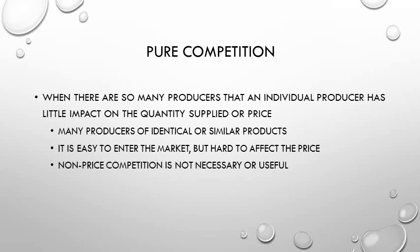The first market structure is pure competition. Pure competition exists when there are so many producers that an individual producer has very little impact on the quantity supplied or the price. Many products of similar or identical quality are provided by an almost limitless number of producers. It's easy to enter this market, but very hard to affect the price because the supply is so great. Non-price competition is not necessary or helpful in pure competition.